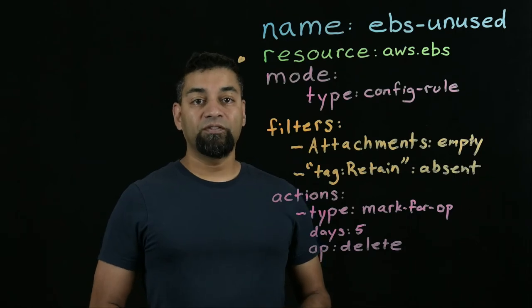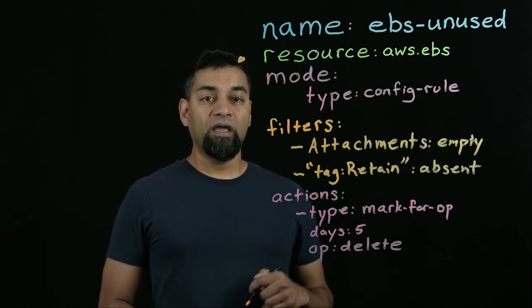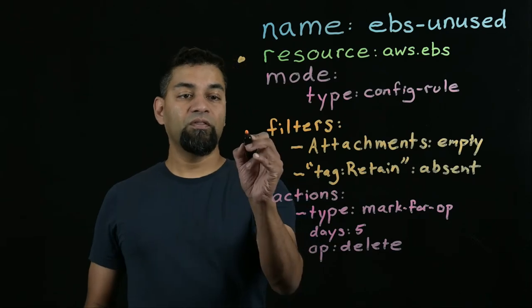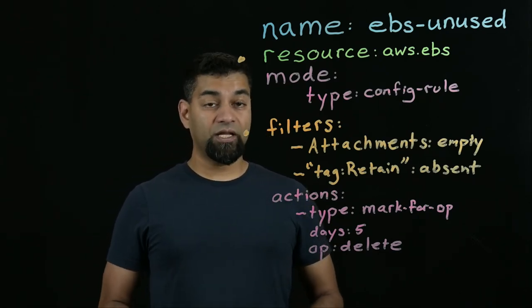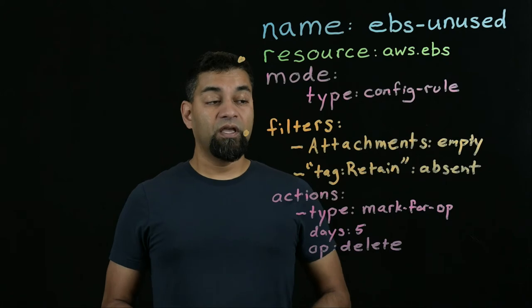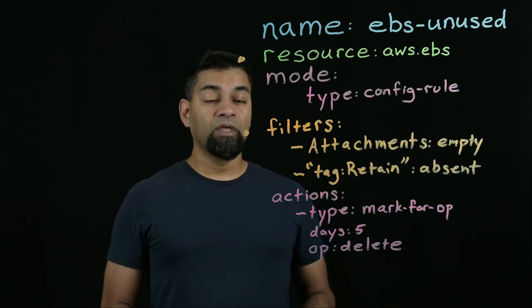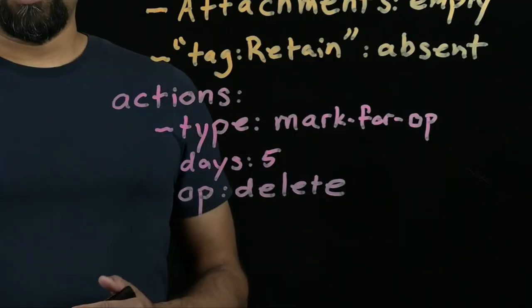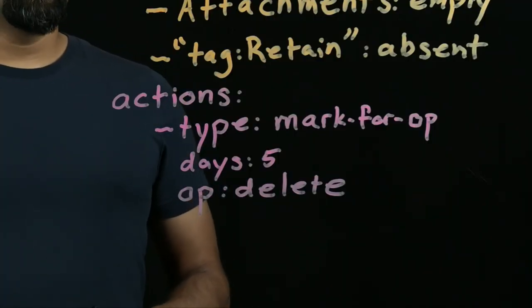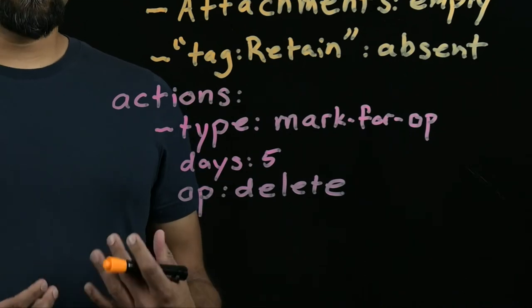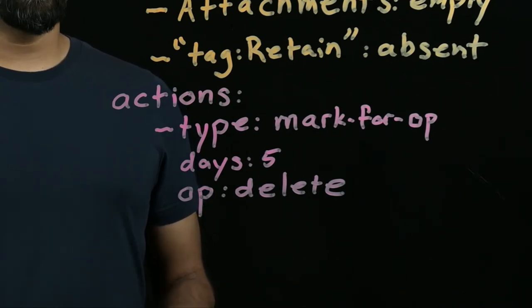Next, a policy defines a set of filters that help it find the things that are interesting to it. In this case, this policy is looking for EBS volumes that are not attached to an instance and that do not have a tag called retain. Finally, we have actions, and in this case the policy will take an action of tagging these EBS volumes to be deleted in five days.